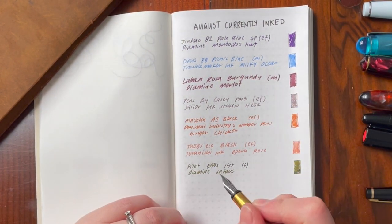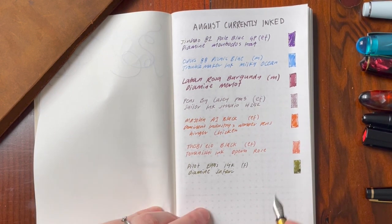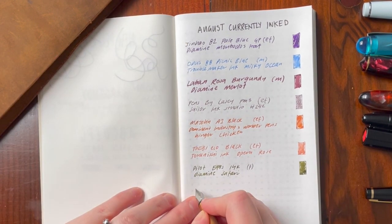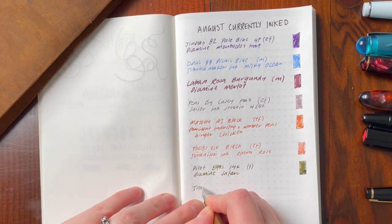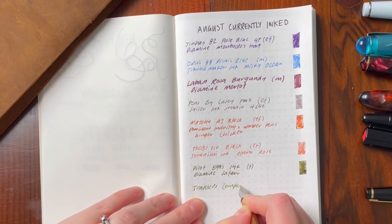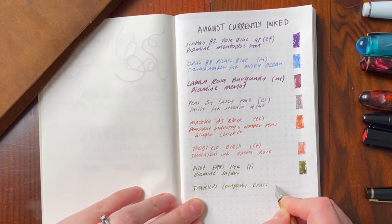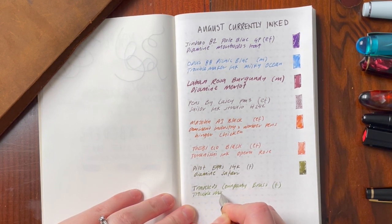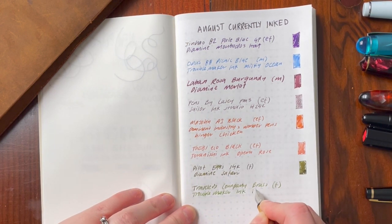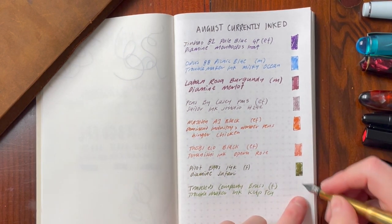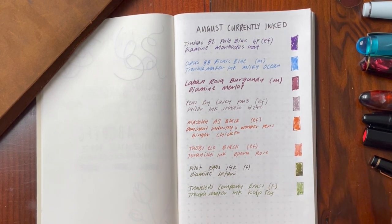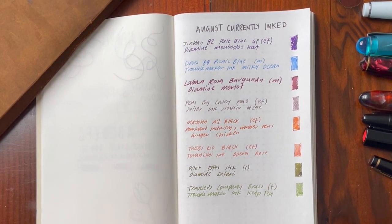Last but not least, Traveller's Company, the Brass Fountain Pen. And this is inked with Troublemaker Kelp Tea. Now I have had a couple of hard starts with this ink in this pen. So interested to see what happens. Oh, it's coming out fine. No issues at all. This is actually the best it's written with. So maybe, I don't know, this pen's a lot happier than after I inked it up that day and the next day, it really wasn't happy. So that is writing a lot nicer.